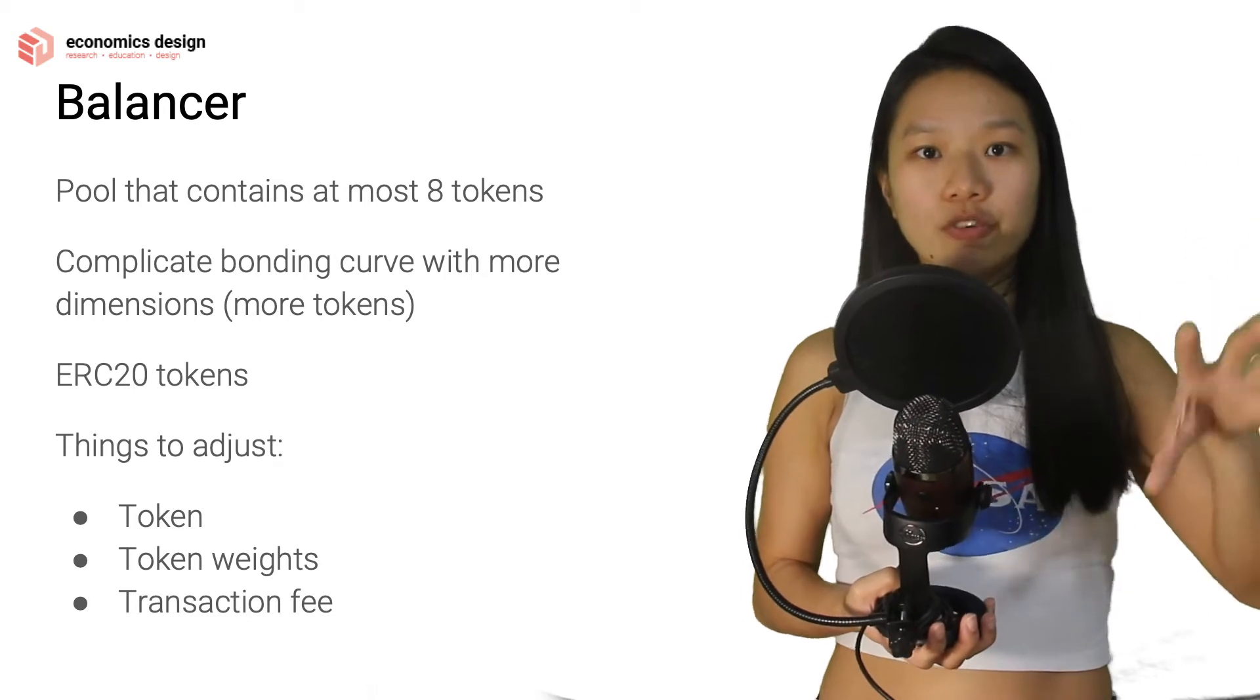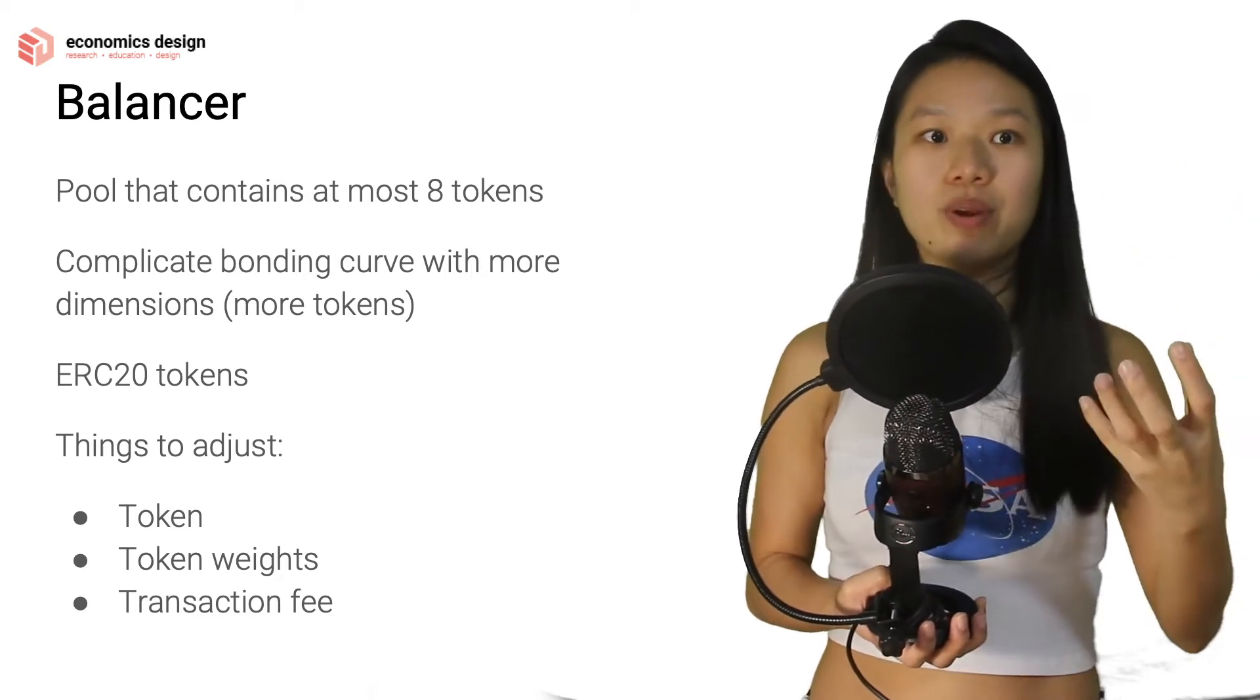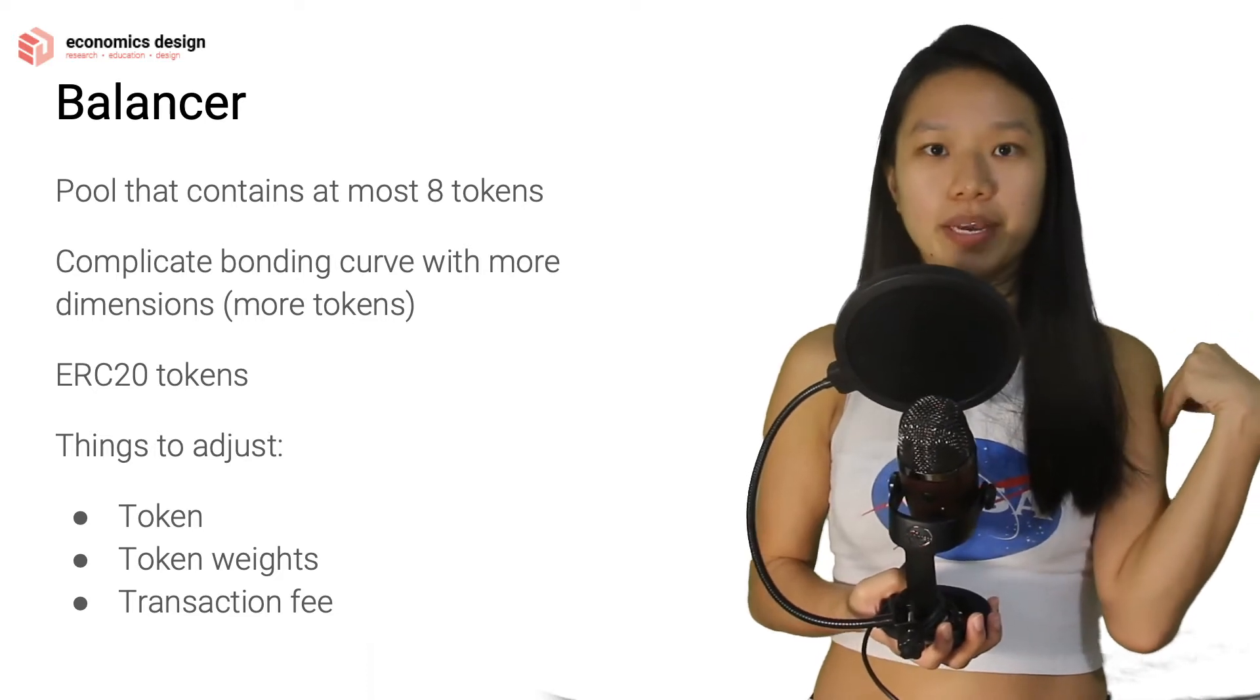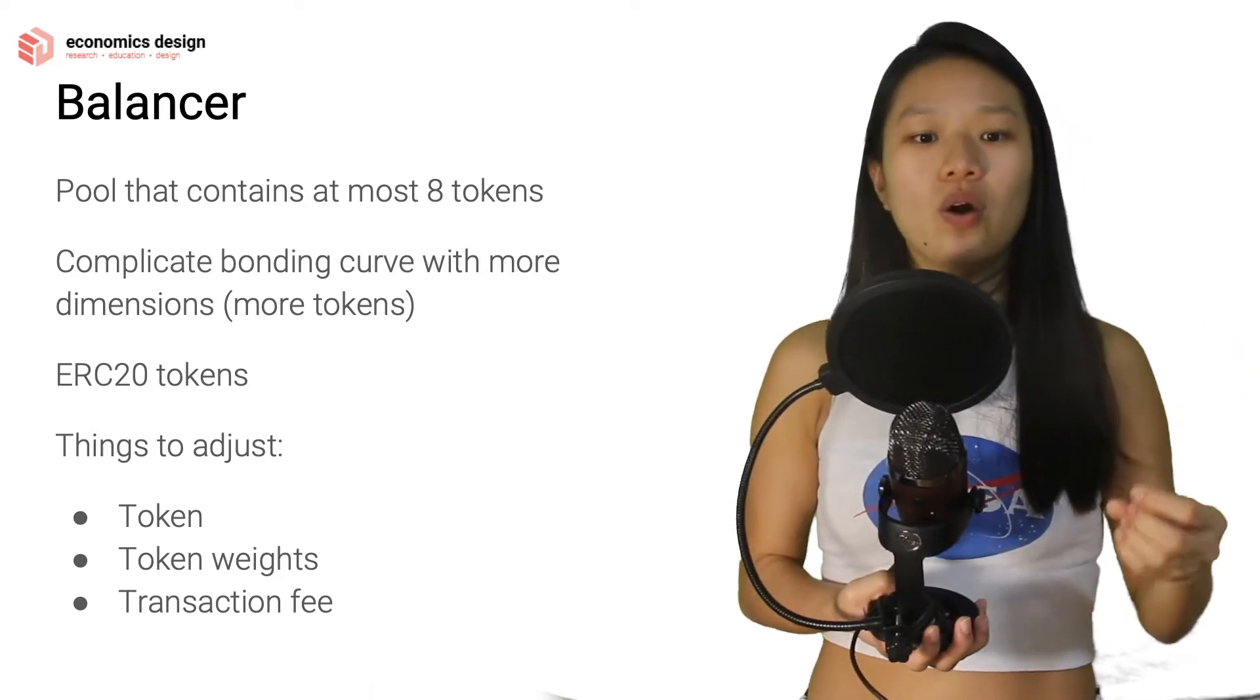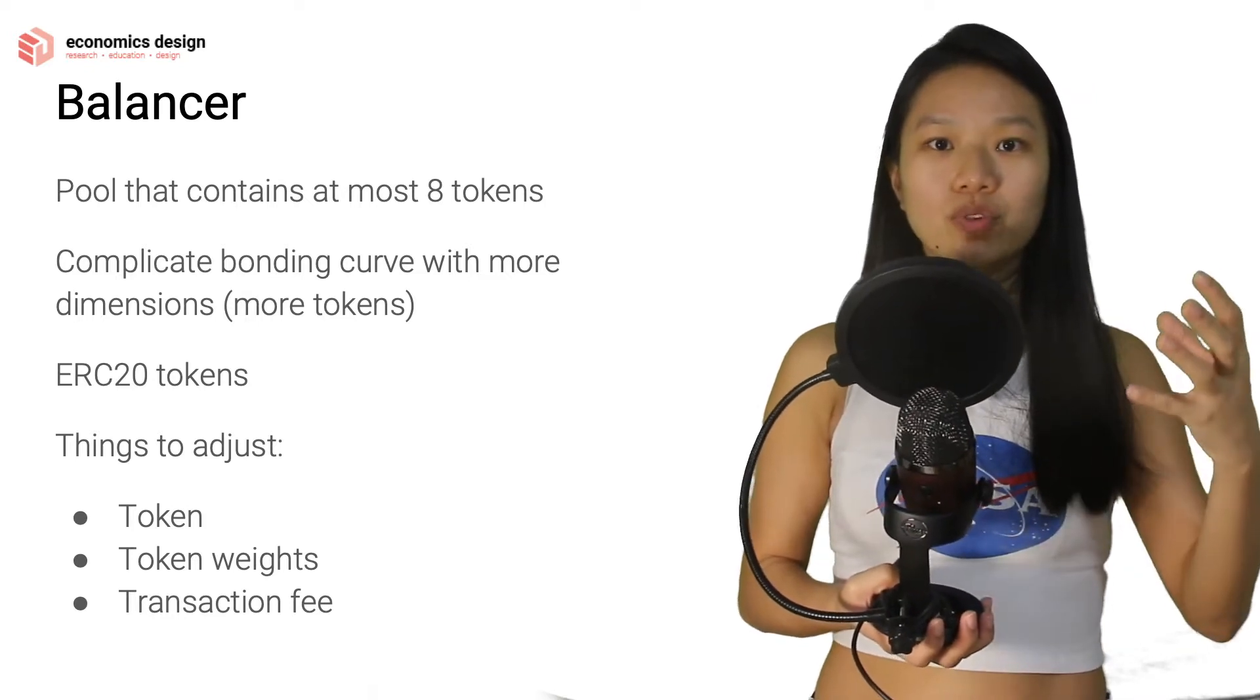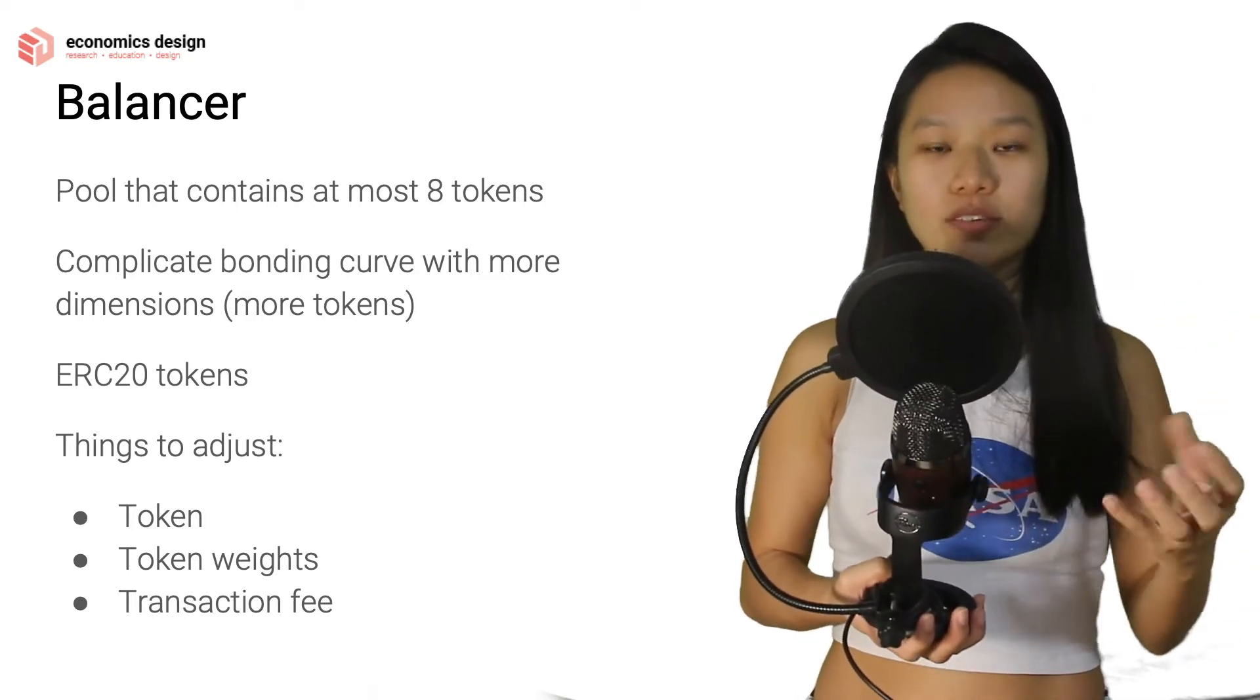When one increases, it has auto-rebalancing, which is what you see in automated market makers. They have a way to balance the different token weights, or you can choose them.